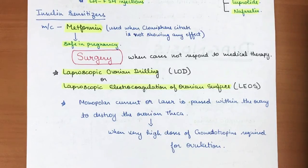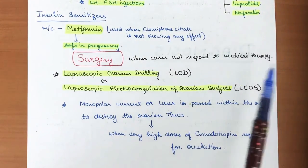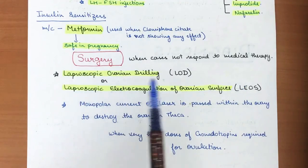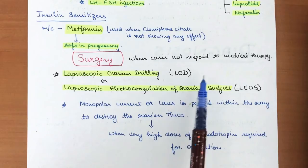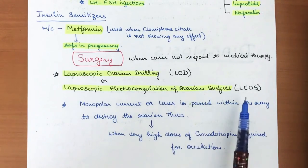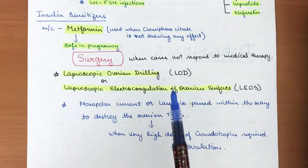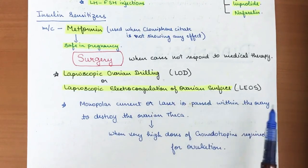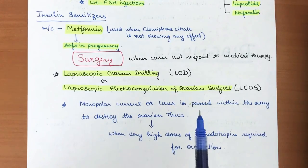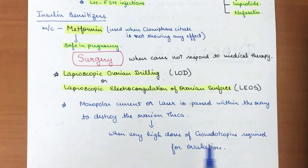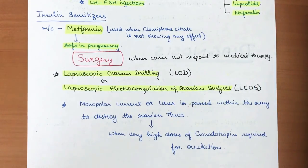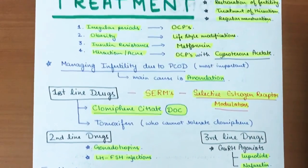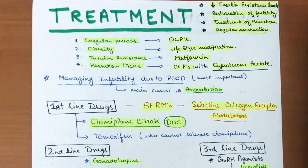When a girl does not respond to medical therapy, surgical treatment is performed. The two main surgical options are laparoscopic ovarian drilling (LOD) and laparoscopic electrocoagulation of ovarian surface (LEOS). In these procedures, monopolar current or laser is passed within the ovary to destroy the ovarian theca. This is mainly done when very high doses of gonadotropins are required for ovulation.